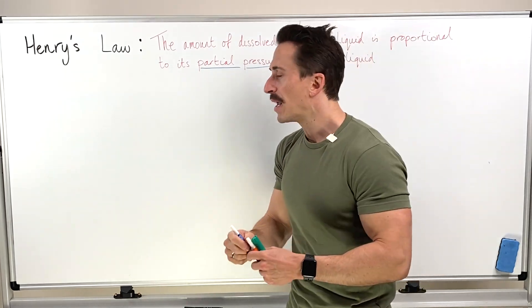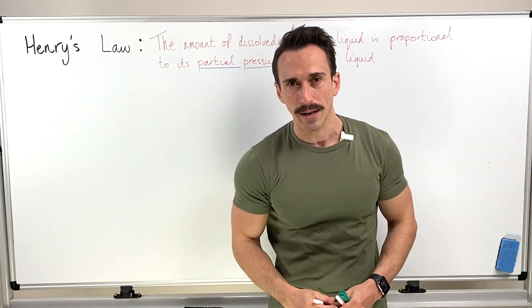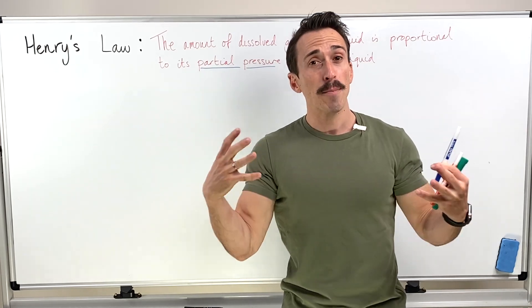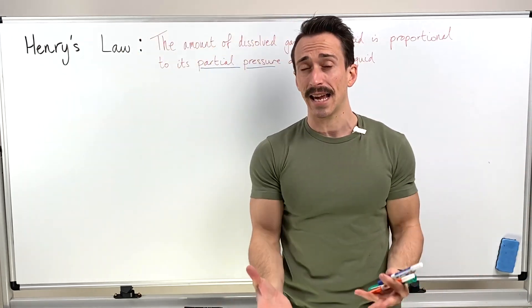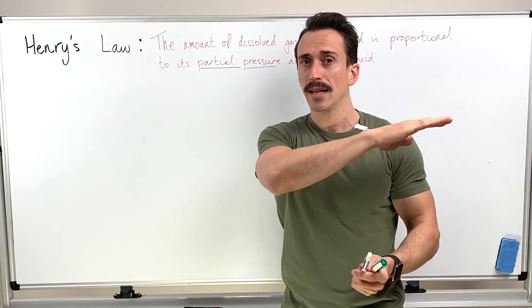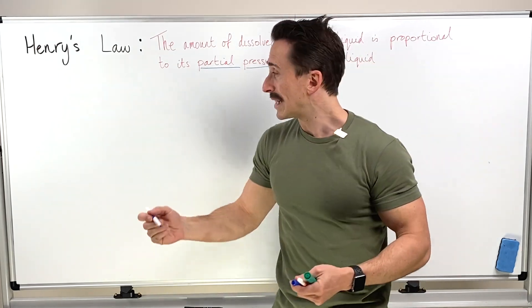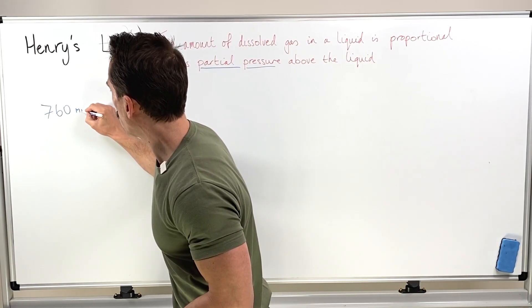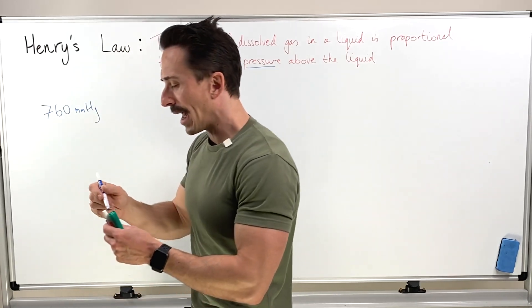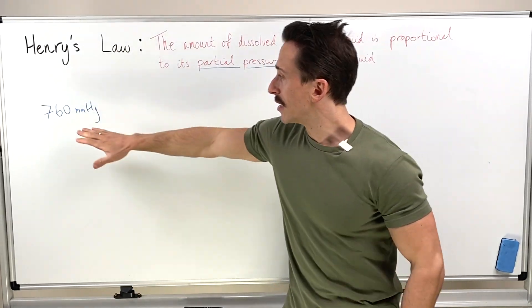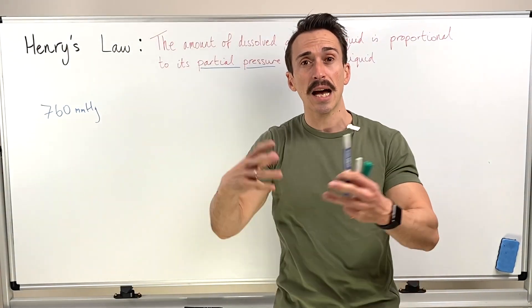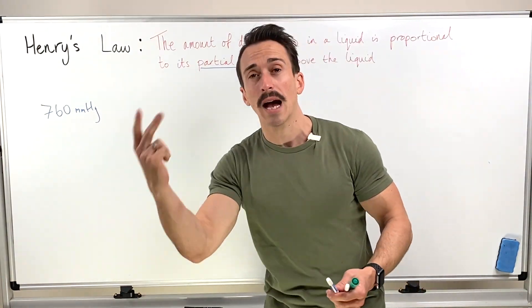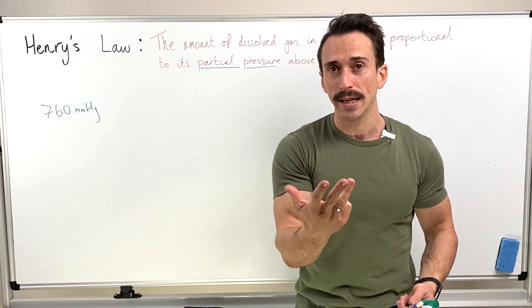Just to reiterate: if we take all of the atmosphere around us, it is exerting a particular pressure on us. That pressure that all the gas together exerts at sea level is 760 millimeters of mercury. Dalton's law states that this pressure is simply the sum of all the individual gases — nitrogen, oxygen, carbon dioxide, and other trace gases.